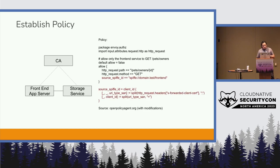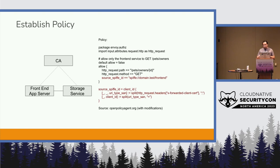Once you have that in place, you can write your policy. In this scenario, you say: this particular identity is allowed to perform these particular sets of actions. In other words, some front-end service is allowed to make a request to some storage service. You're pulling the information directly from X.509 — something you've already validated — and making a determination on what you want to do with it.